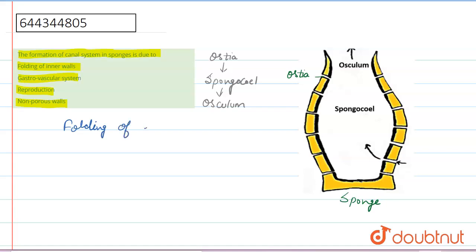folding of inner wall is the right answer. So option A is the right answer. Now see option B. Option B is gastrovascular system. So we can say that gastrovascular system is absent in sponge.